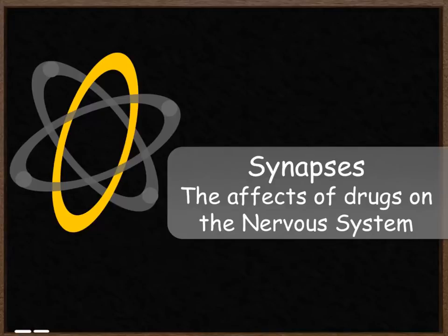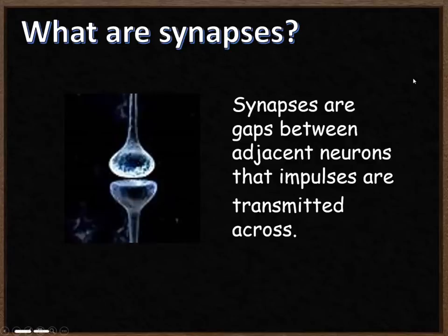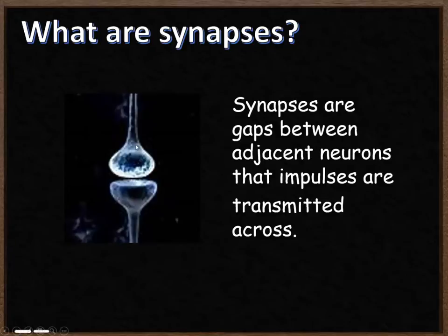Synapses and the effect of drugs on the nervous system. Synapses are the gaps between two adjacent neurons, and they need to allow a nerve impulse to be transmitted across them. You have one neuron, the small gap which is the synapse, then the next neuron. For an electrical impulse to get across the synapse, something needs to happen.